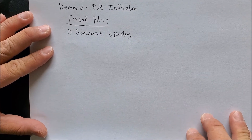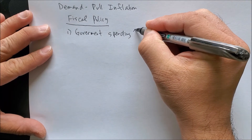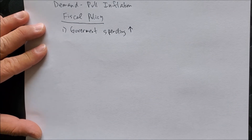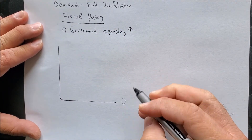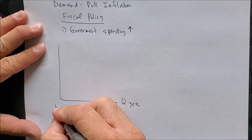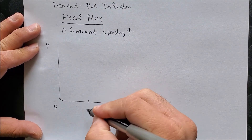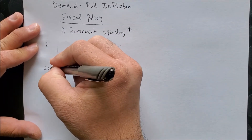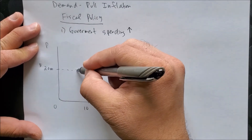Now we're going to see how government spending affects demand-pull inflation. Let's say that government spending is going to increase — perhaps because Congress would like to purchase more government jets. We can draw the government market with quantity of jets on the x-axis and price of jets on the y-axis. For example, 10 to 100 jets on the x-axis, and on the y-axis the price of a jet — let's say about 20 million dollars. Now we have our equilibrium point, point A.